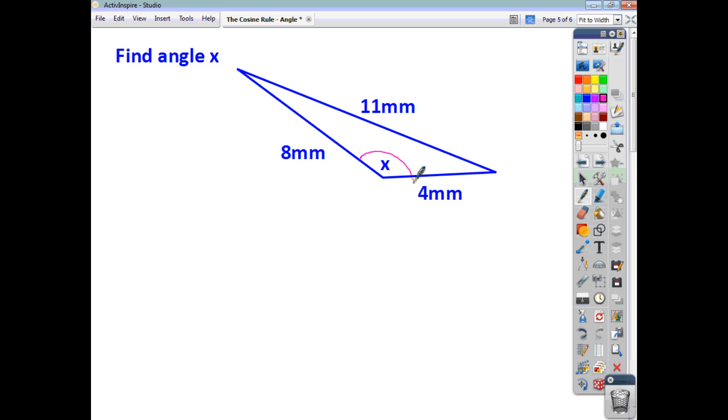This time we're looking for angle X. Across from angle X is this side here, which is 11 millimeters, that's the side you're going to end up subtracting in your formula. So we'll say cos of X is going to be 8 squared plus 4 squared minus 11 squared. We then divide everything by 2BC, so 2 times 8 times 4. With brackets around it, work that out in the calculator, you end up with cos of your angle being negative 0.64.